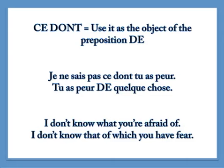Here's another example using ce dont — a reminder, we use it as the object of the preposition de. Je ne sais pas ce dont tu as peur. Why dont? Look at this: tu as peur de quelque chose — this is an expression that requires de. So if you have fear of something, 'I don't know what you're afraid of,' or in other words, 'I don't know that of which you have fear.' Je ne sais pas ce dont tu as peur.